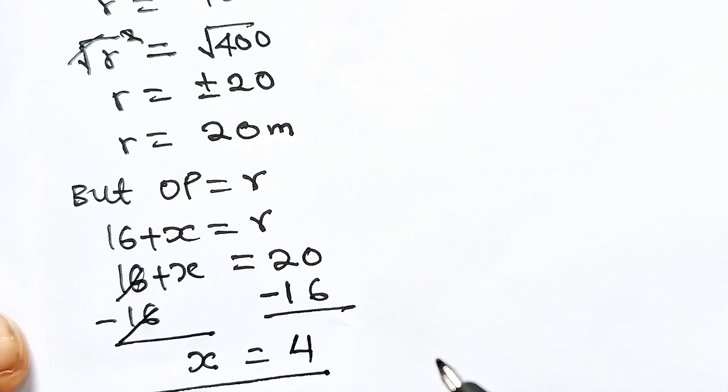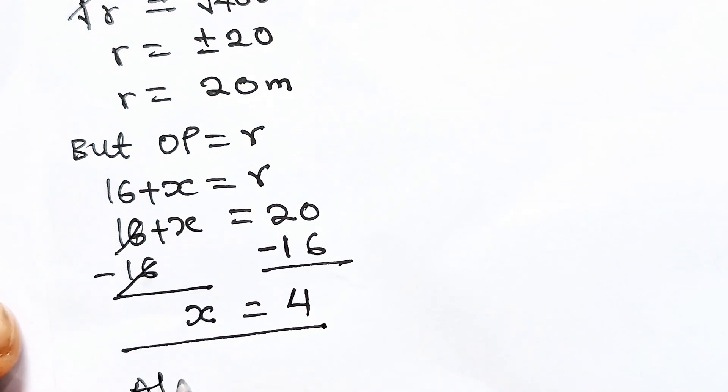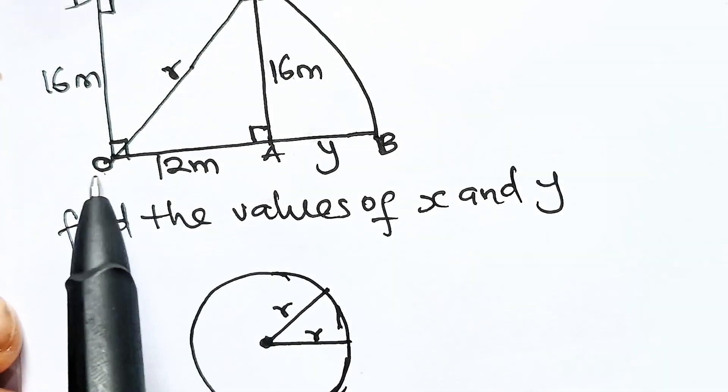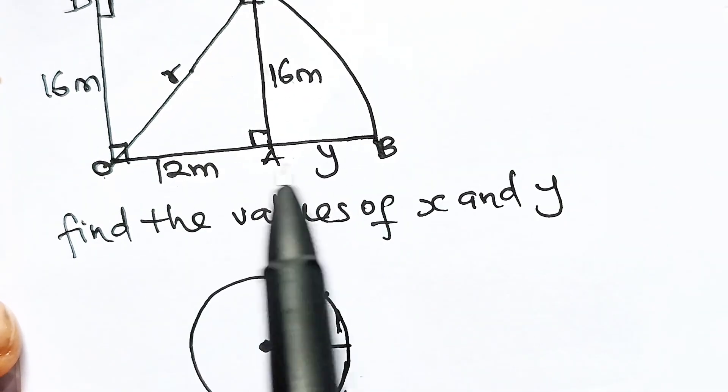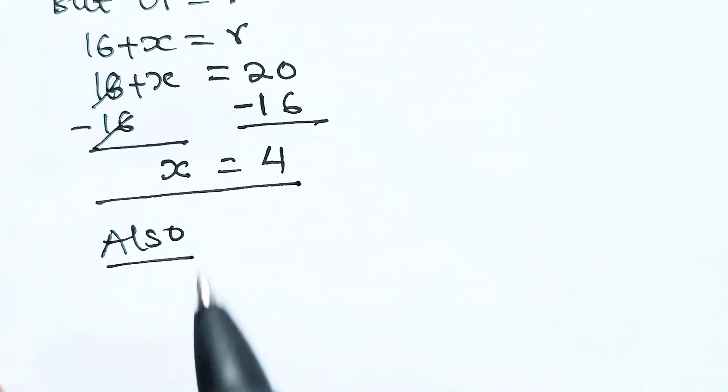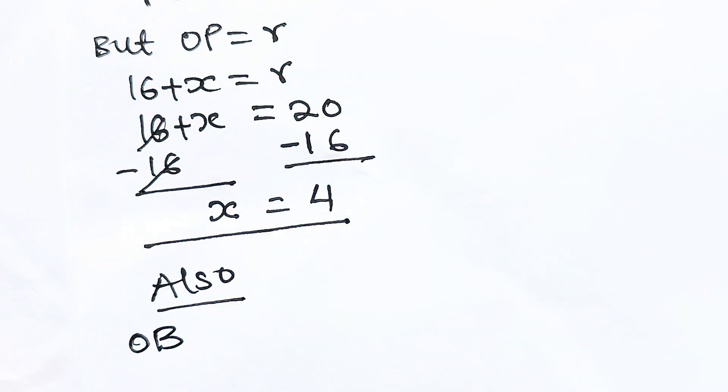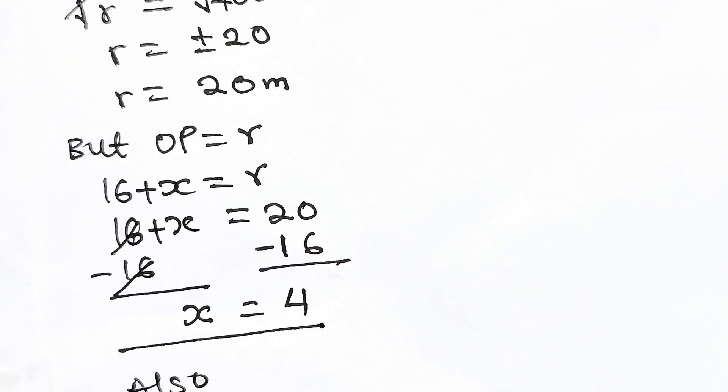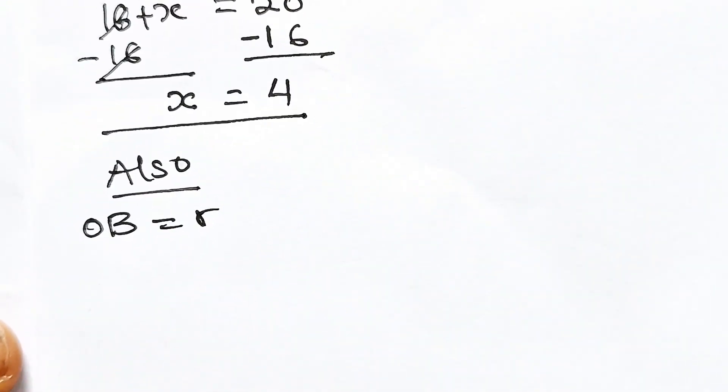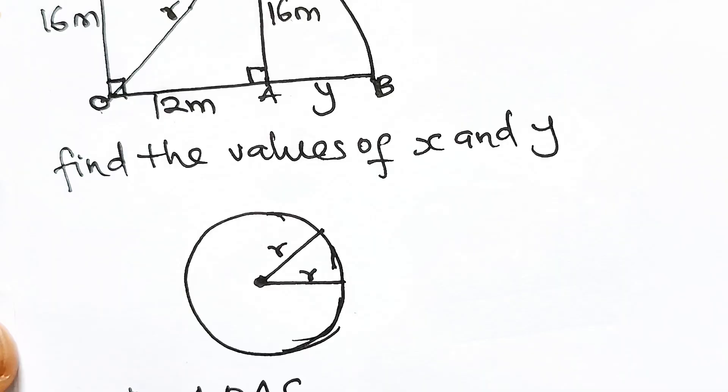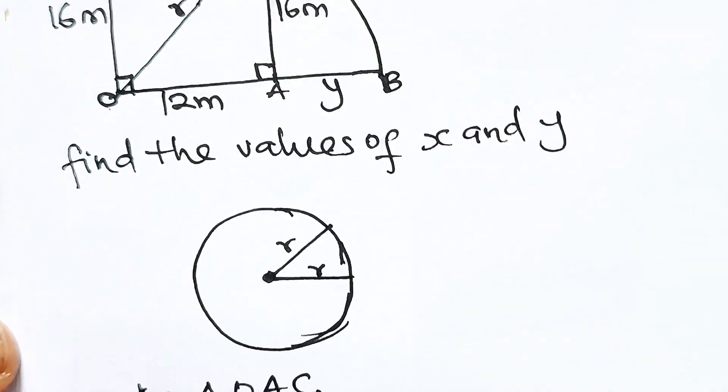Also, OB is also the radius of this circle. So OB = r, and OB is 12 + y.